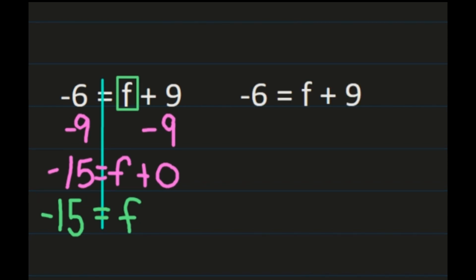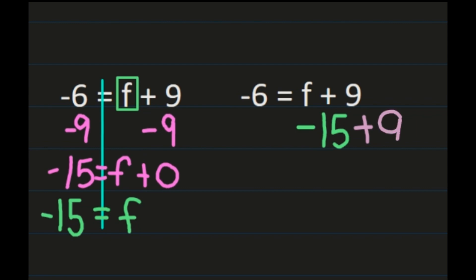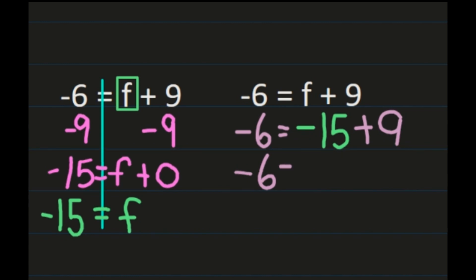We can check our work. Substitute negative 15 for f: negative 15 plus 9 should equal negative 6. On the right, negative 15 plus 9 is adding integers with different signs, so we subtract absolute values: 15 minus 9 is 6, and we keep the sign of the larger absolute value, which is the 15 — so it's negative. We get negative 6 equals negative 6, confirming our answer.